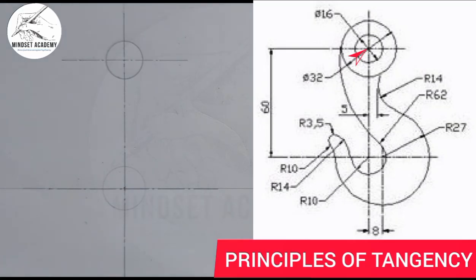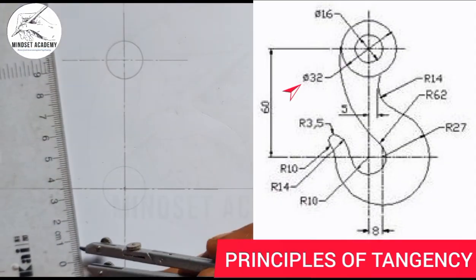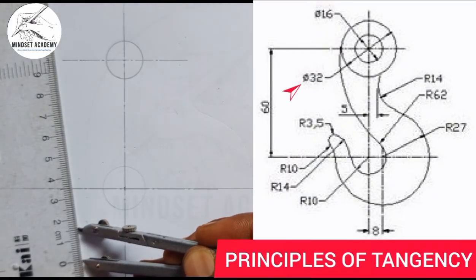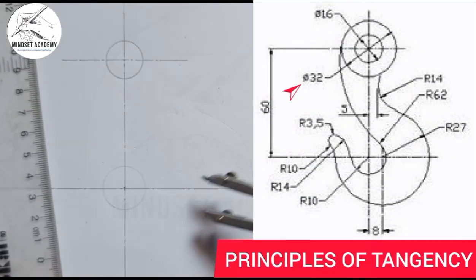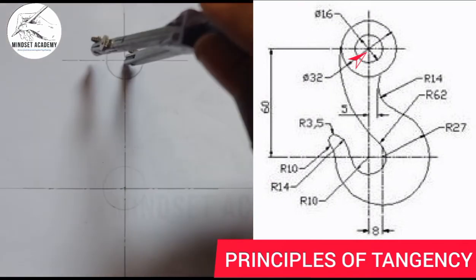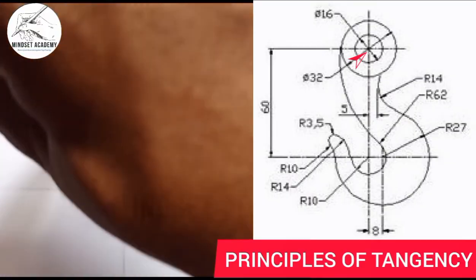The outer circle has a diameter of 32, so divide by 2 to get a radius of 16 — since 16 plus 16 is 32. I'm going to measure 16, place it at that same center, and draw another circle.